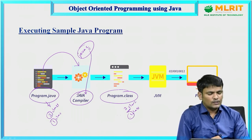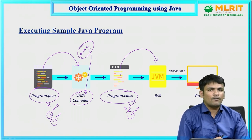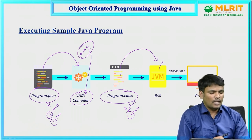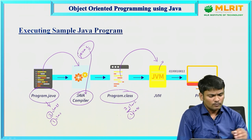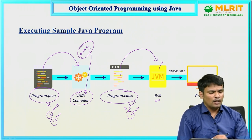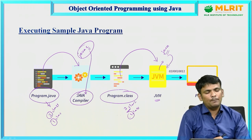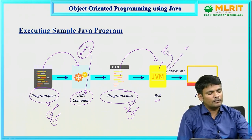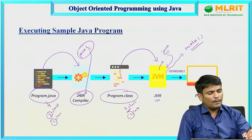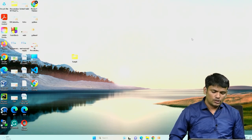After getting the .class file, hand it over to JVM. JVM is responsible for executing the Java program. Use the 'java' command to call JVM — JVM always searches for the main method (public static void main). The .class file contains bytecode, which is not human-readable. JVM takes the .class file as input and executes the output.